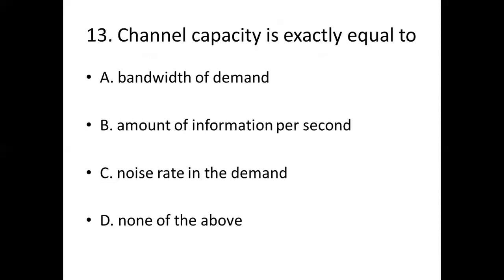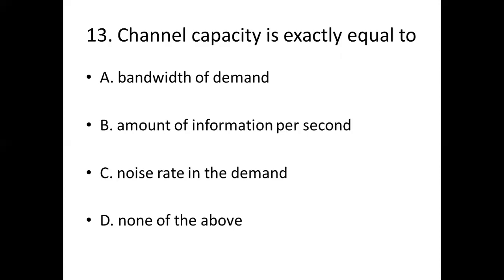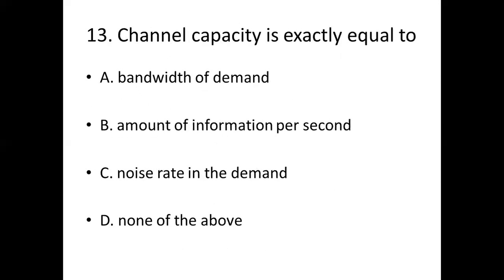13th bit. Channel capacity is exactly equal to: Option A, bandwidth of demand. Option B, amount of information per second. Option C, noise rate in the demand. Option D, none of the above. Answer: Option B, amount of information per second.